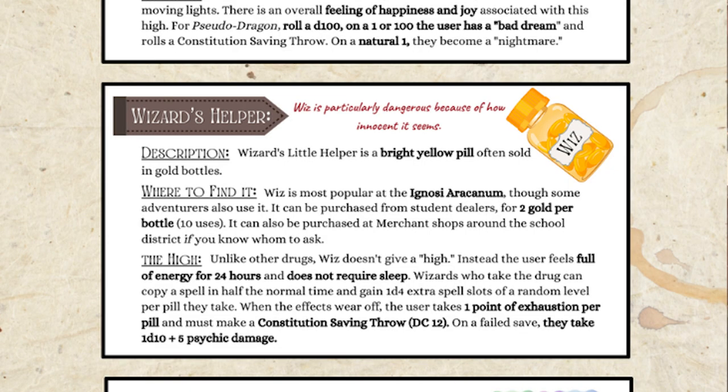I created three main drugs for Ignosi. The first one is Wiz, or Wizard's Little Helper, which is based on Ritalin. People take Ritalin for ADHD, but if you don't have ADHD it helps you focus, concentrate, and gives you a crazy amount of energy. I used this specifically for Wizards — it gives a bonus on concentration saves during battle and helps them record spells in half the time. The downside is it keeps them awake, so they'll get levels of exhaustion once it wears off.